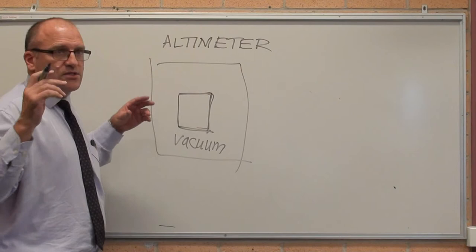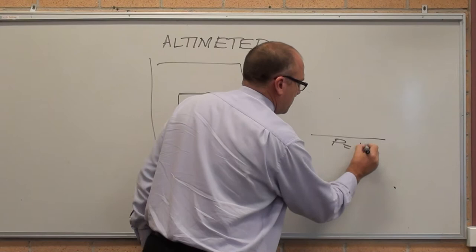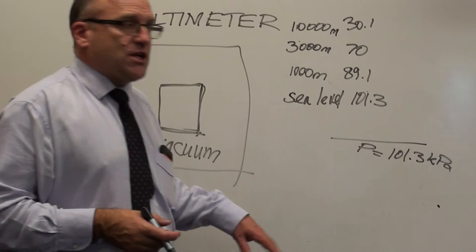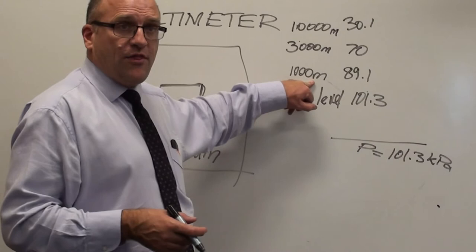So at air, at ground level, pressure equals 101.3 kilopascals. So the air pressure at sea level is 101.3 kilopascals.